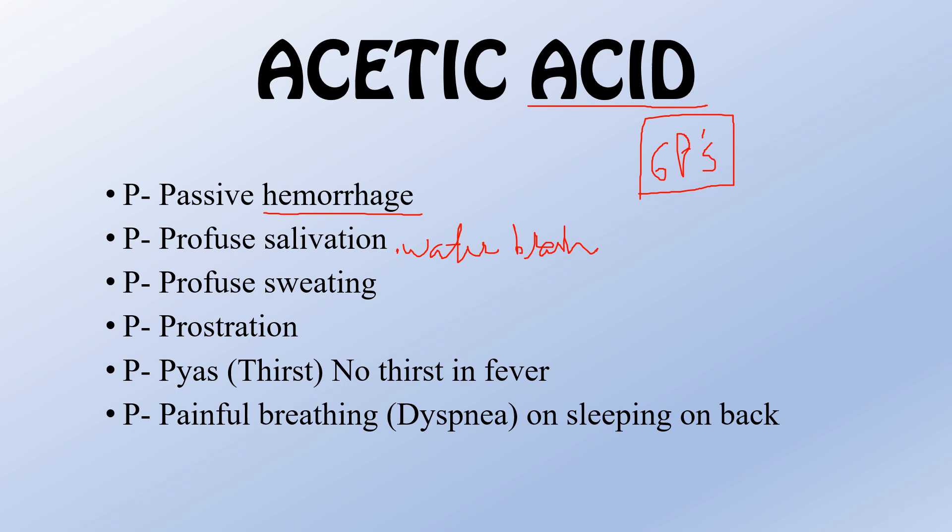Moving on, the third P represents profuse sweating. Another P represents prostration — that means extreme tiredness or thakan.